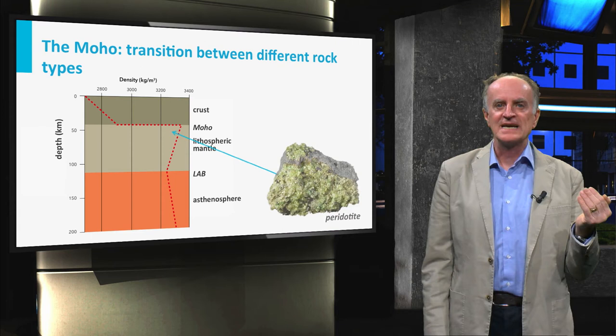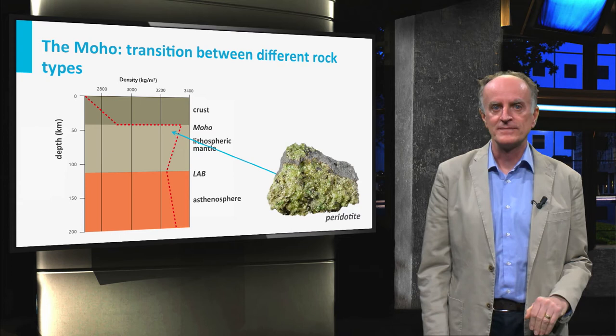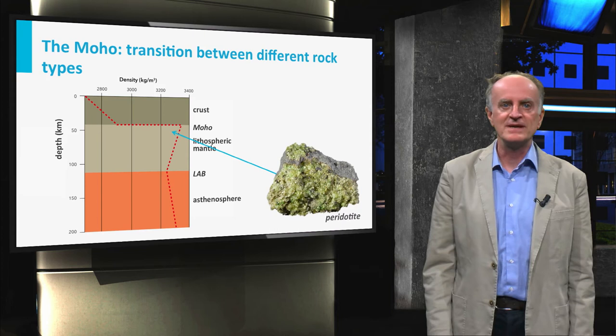Rocks below the MOHO have seismic velocities of 8 kilometers per second and densities of more than 3000 kilograms per cubic meter. These rocks are therefore part of the mantle. Correspondent rocks are mainly peridotites composed predominantly of the heavy and strong mineral olivine.